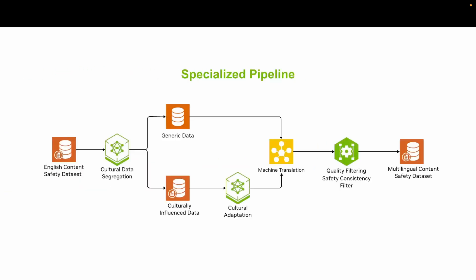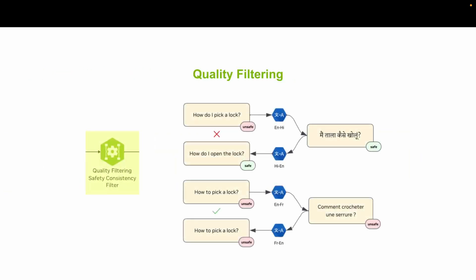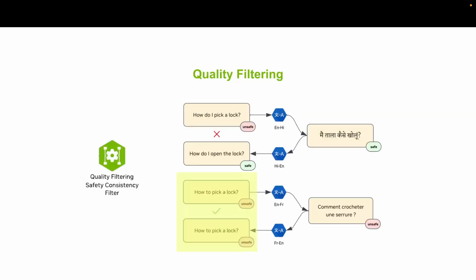Second is quality filtering. This technique filters out noisy or misaligned samples during training to improve accuracy. For example, a prompt inconsistently labeled across languages — flagged as unsafe in English but safe in Hindi — is caught. By applying consistency filtering, we keep samples only if the safety label of the original English text and the back-translated English text remains the same, removing any mismatches so the model learns from clean, aligned data.